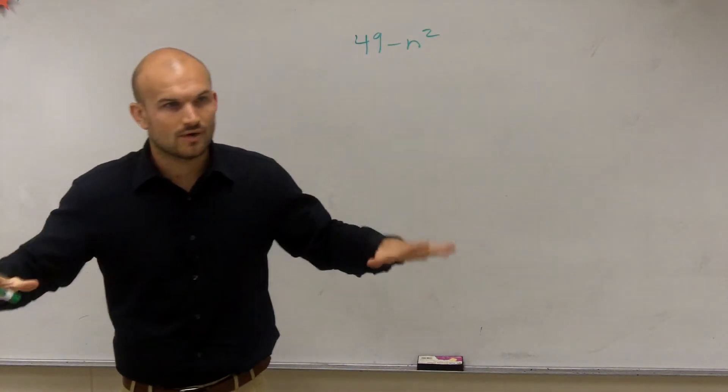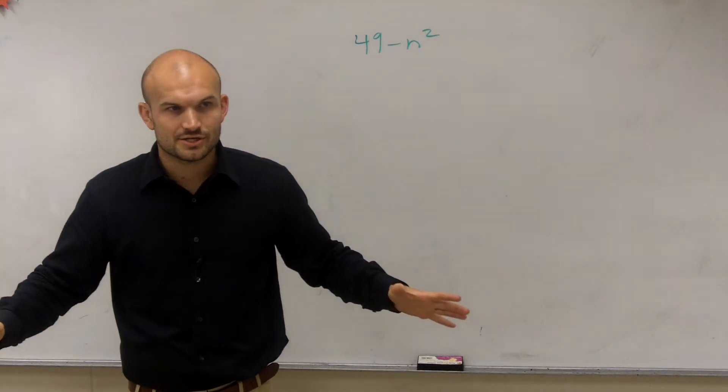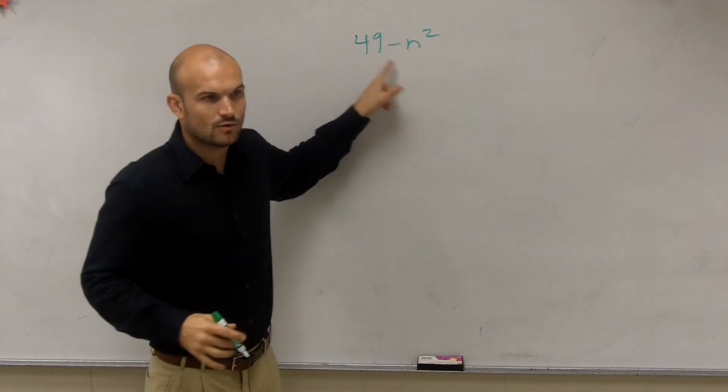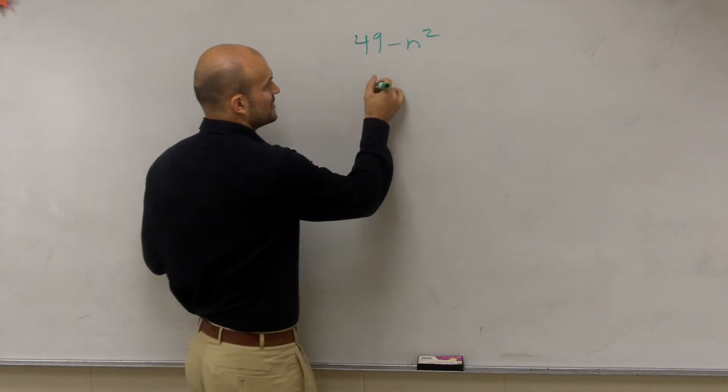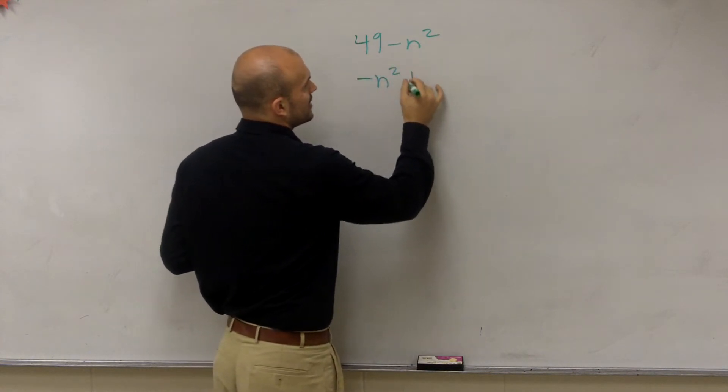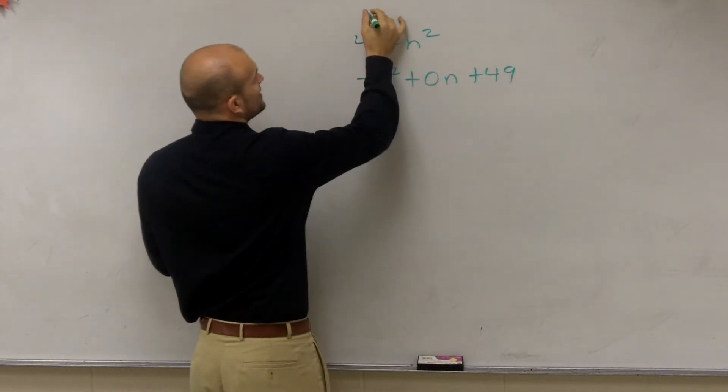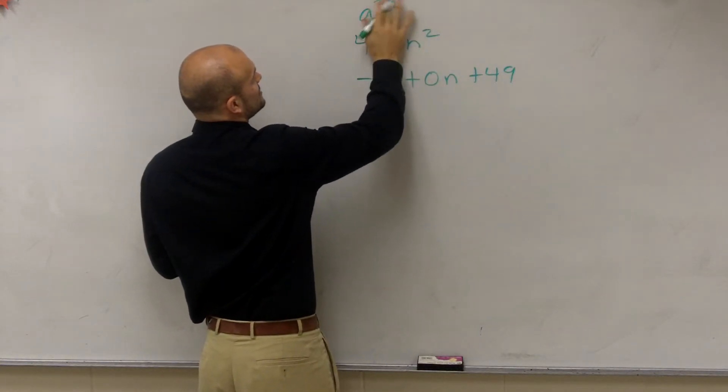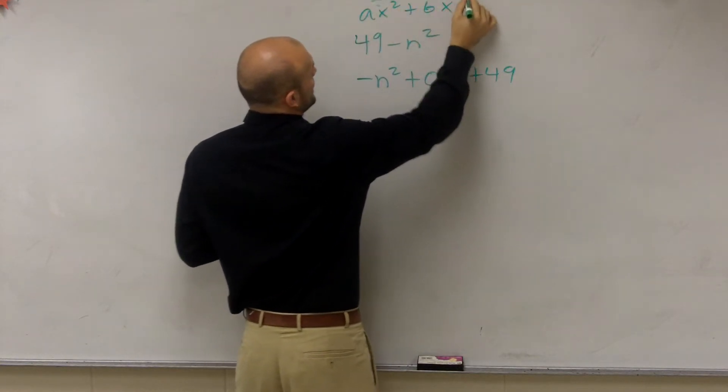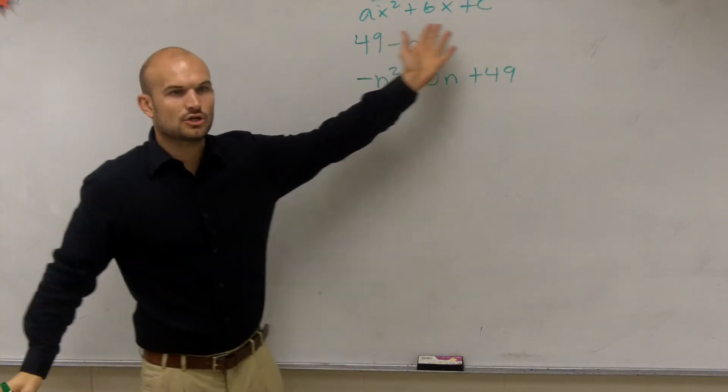However, let's go back to what we just know. What is the only thing we know how to do? Put it in its quadratic form. Is this in quadratic form? No. Let's rewrite this as negative n squared plus 0n plus 49, right? Because remember, ax squared plus bx plus c. That is your quadratic form.